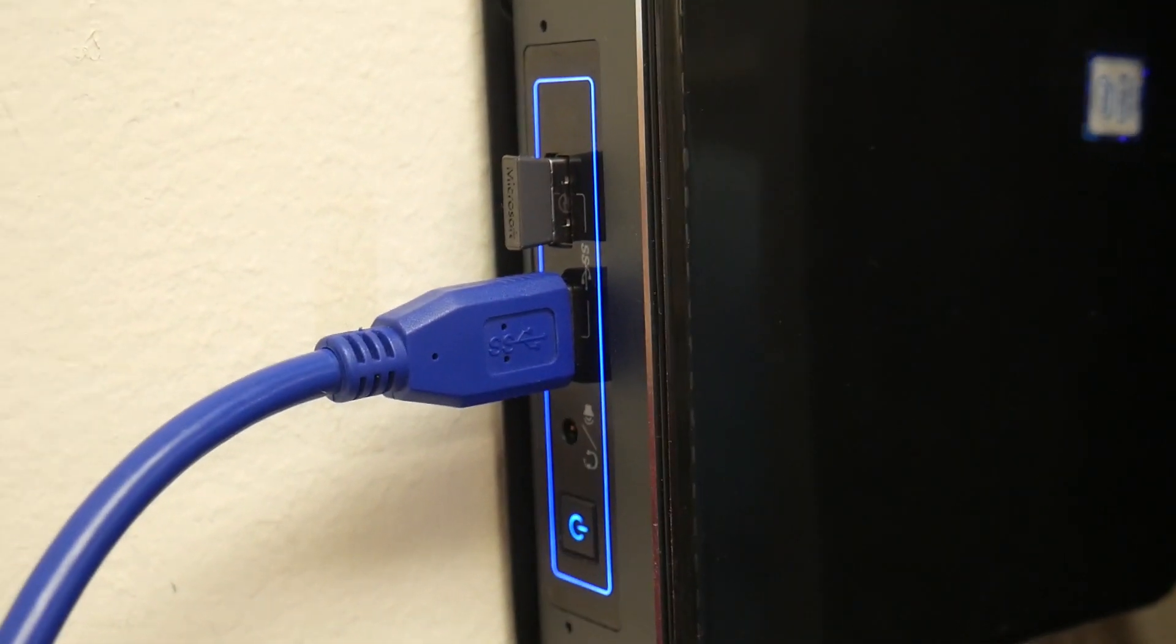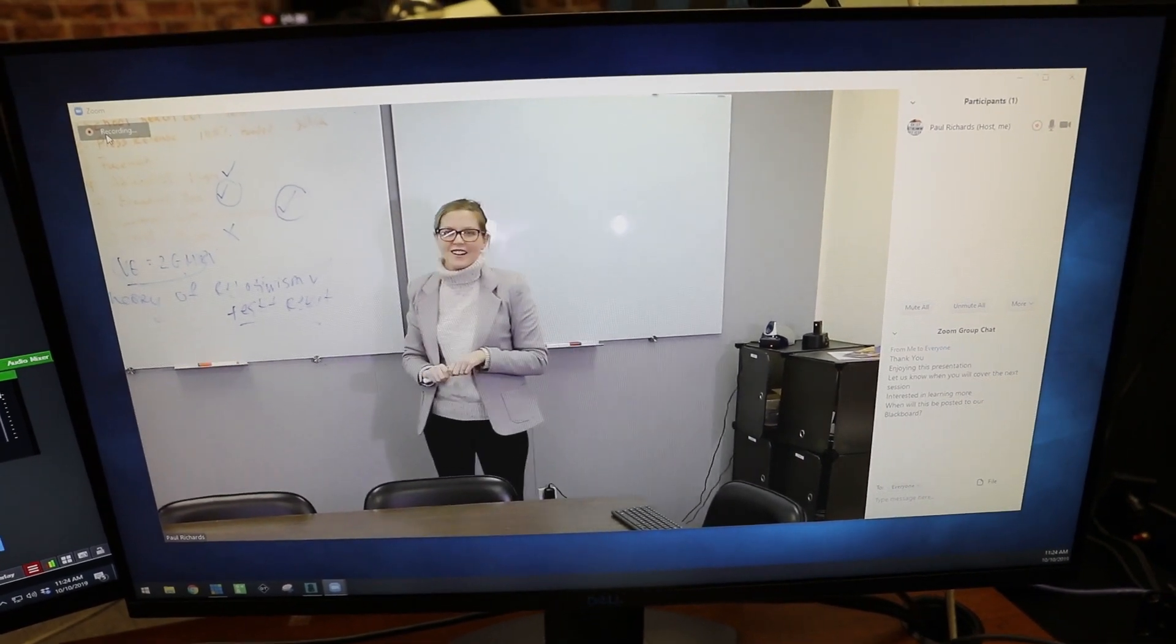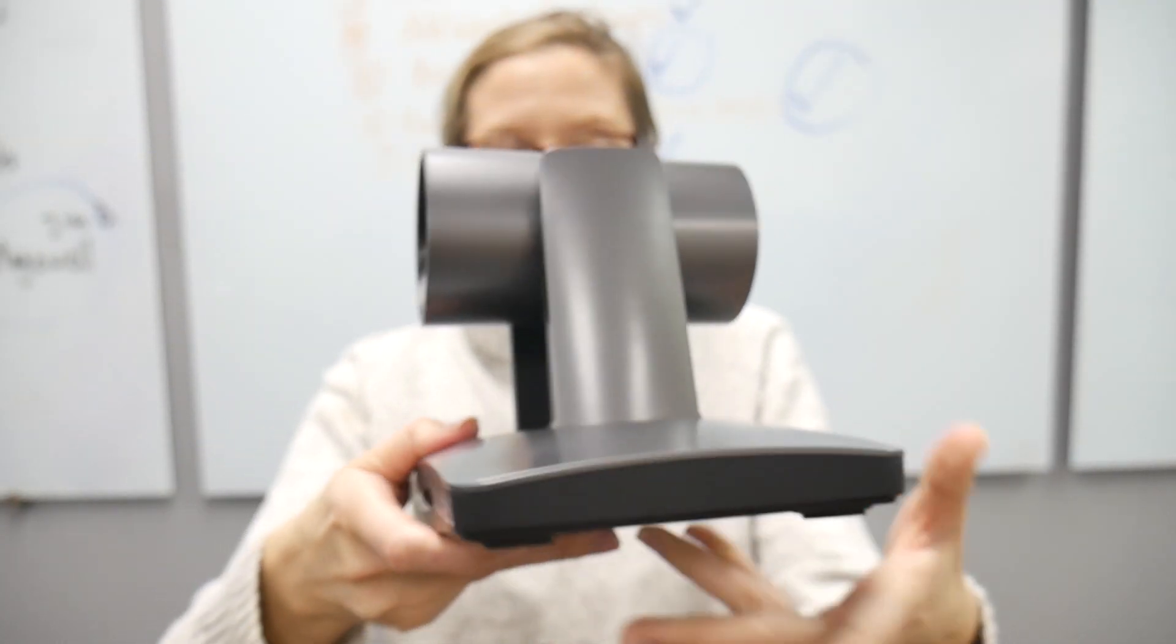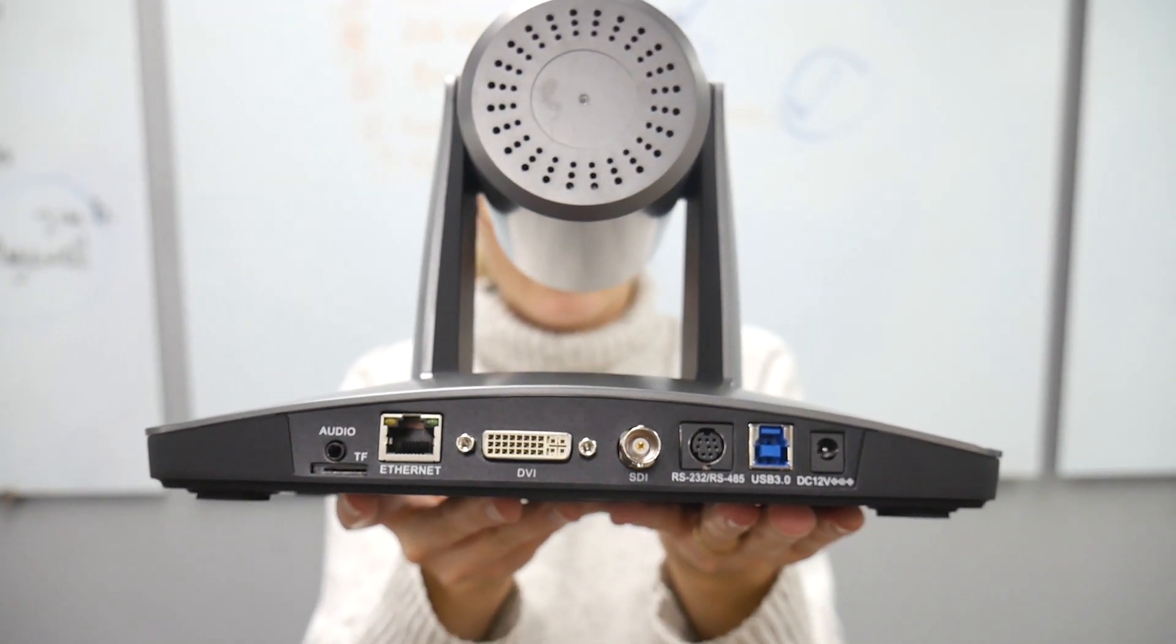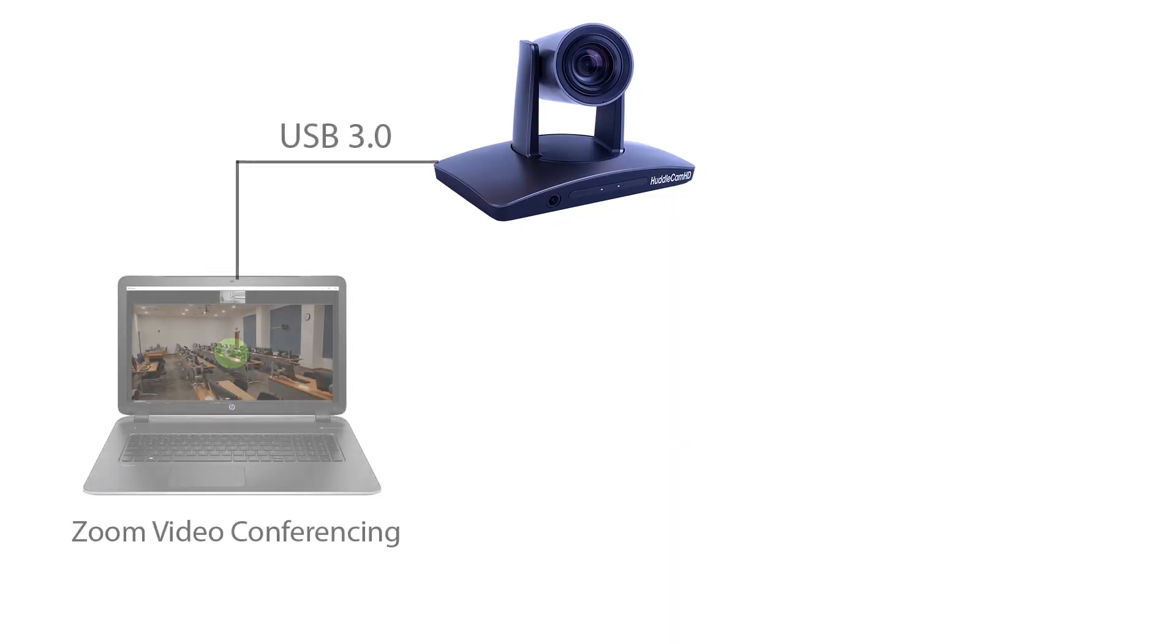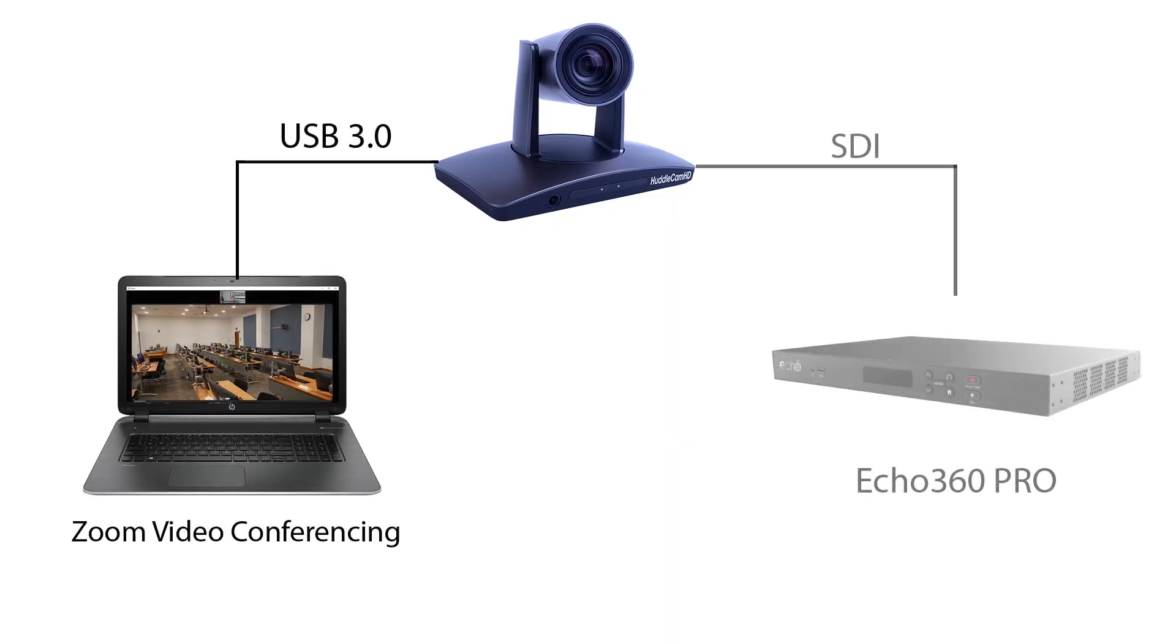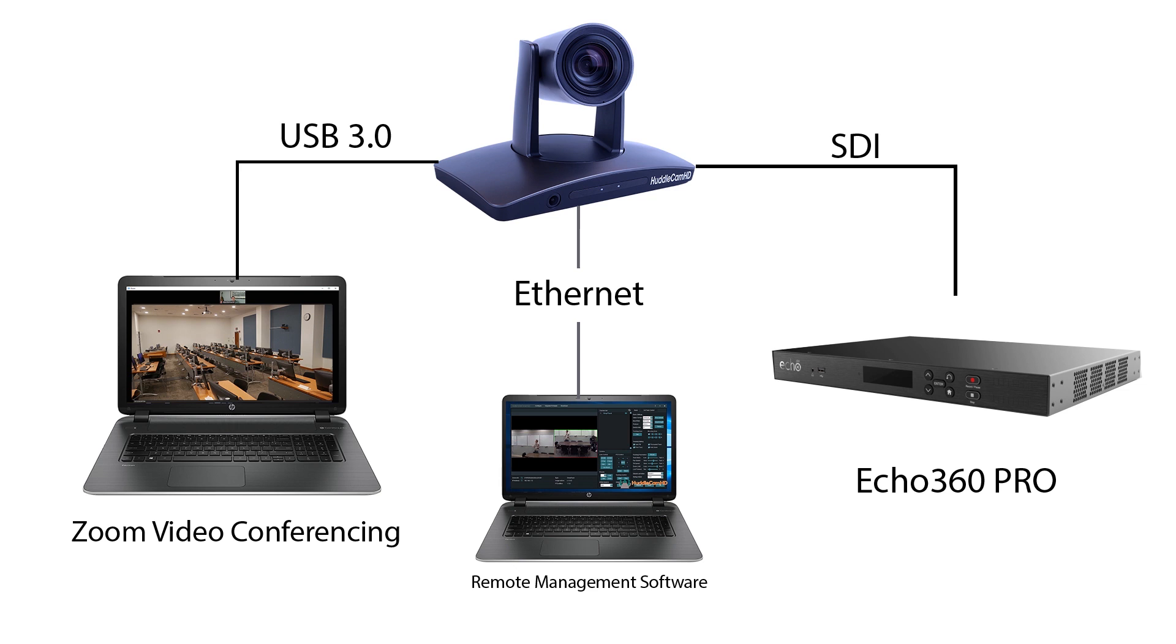The SimpleTrack 2 actually supports three simultaneous HD video outputs, which include USB 3.0, SDI, and DVI, which can easily be converted to HDMI. Many of our customers will use multiple sources at the same time. For example, many higher education classrooms will use USB 3.0 for Zoom video conferencing, and SDI or DVI with a lecture capture recorder such as Echo360.